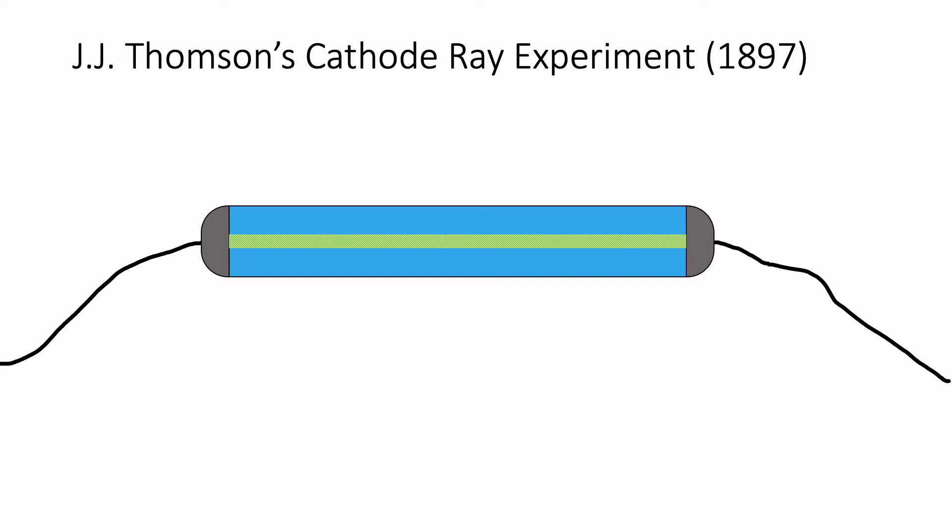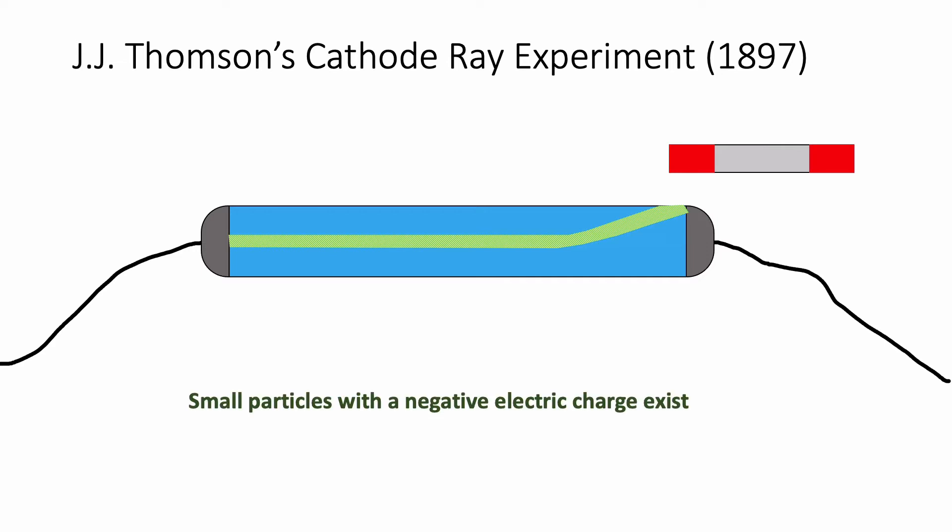Well, what J.J. Thompson did with this was he tried putting a magnet up against the cathode ray tube. And what he found was that the ray of whatever it was in the cathode ray tube was attracted to or repelled from, depending on which pole the magnet he was using, to the magnet. So something in there was charged. So what J.J. Thompson deduced from this was that there were small particles that had a negative electric charge that existed somewhere. And he called these particles corpuscles, which always makes me think of blood, but whatever. So people talked about these particles that had a negative charge.